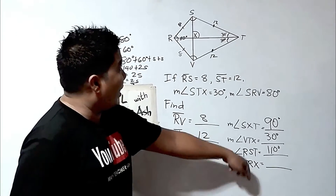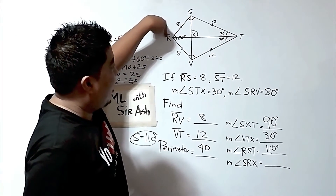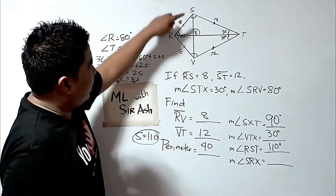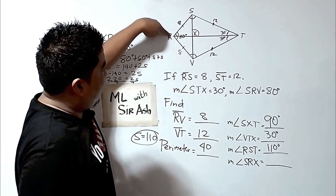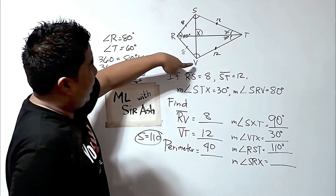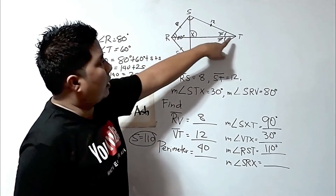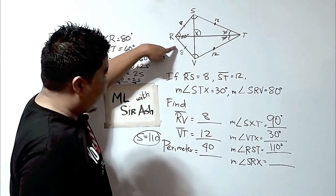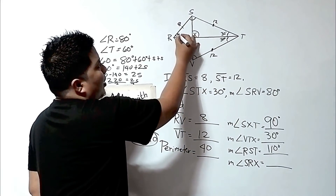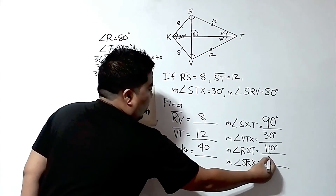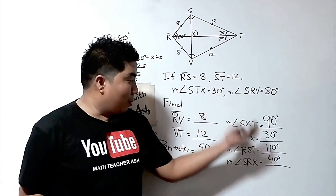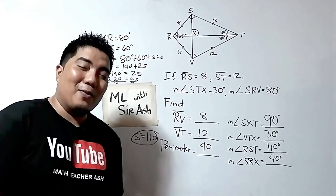For angle SRX: since SRV is 80 degrees and this diagonal bisects this angle, we divide by 2 — giving us 40 degrees. And we have now answered all our problems in this given figure. I hope you now have a concrete understanding about kites.